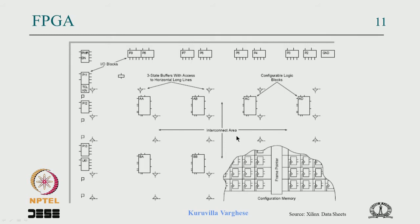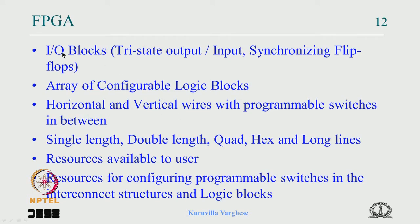It is up to the designer to exploit available resources through parallel computing, pipelining, and high-throughput design — that is how performance is achieved with an FPGA. The FPGA consists of IO blocks with tri-state output, input, and synchronizing flip-flops for signals coming from another chip or clock domain, plus an array of configurable logic blocks with horizontal and vertical wires with programmable switches. Wires are single length, double length, quad, hex, and long lines, depending on circuit connectivity statistics.